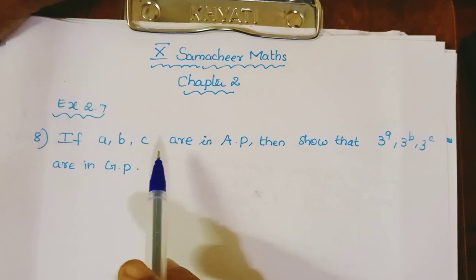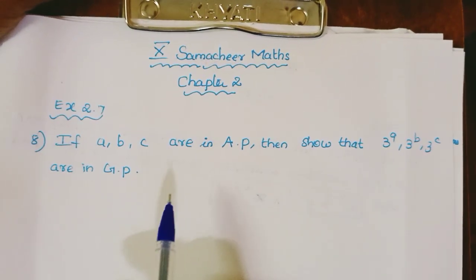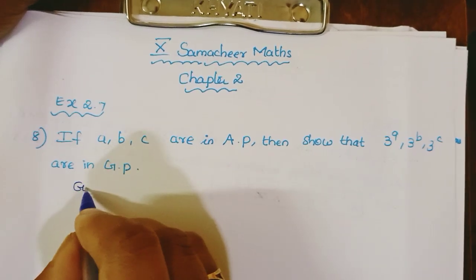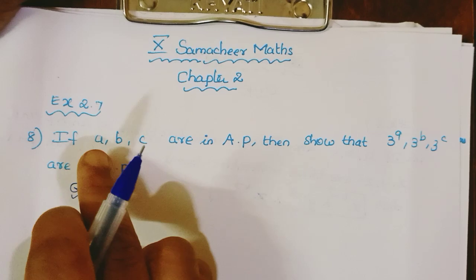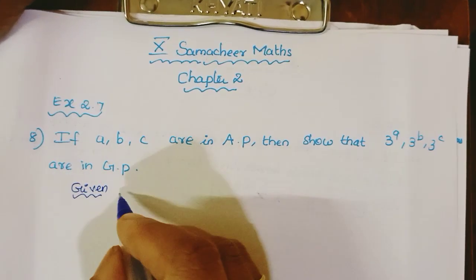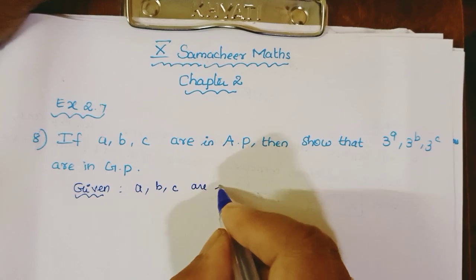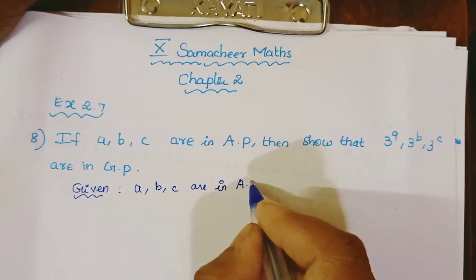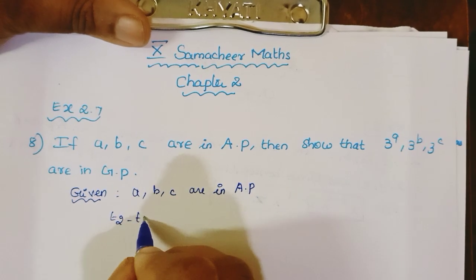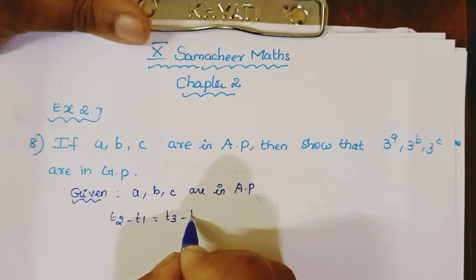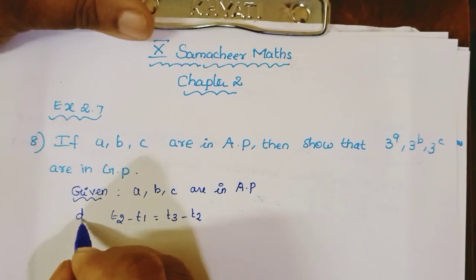One hint is that A, B, C are in AP. The concept in AP is that T2 minus T1 is equal to T3 minus T2 — the common difference will be the same.